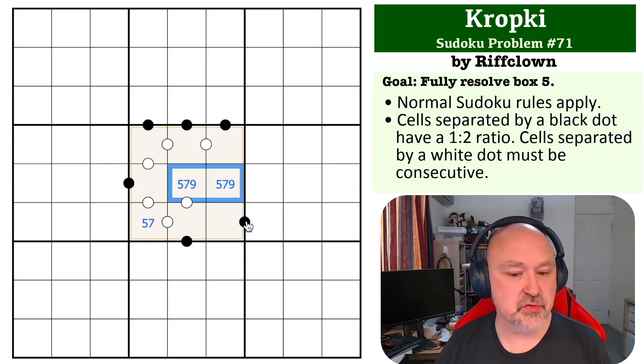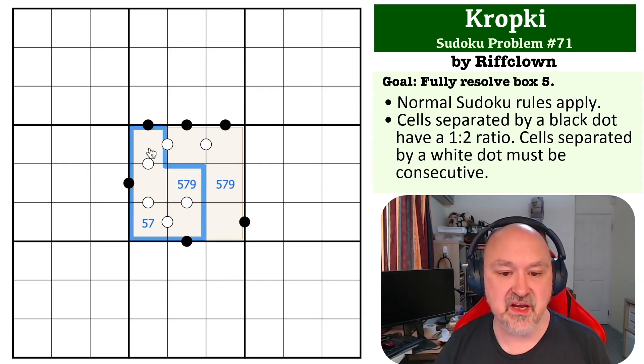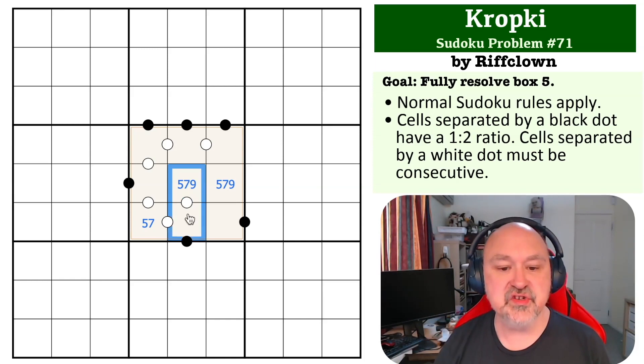Now the question is, which one of these two is the nine? Well, if you put a nine here, this is going to be a chain of consecutive digits, because it just has to be. Once you start working down a run of white dots, it would have to be, just the way the consecutive dots work, because you can't repeat any digits here.